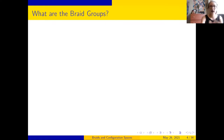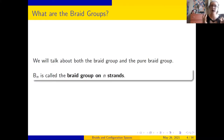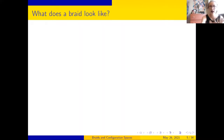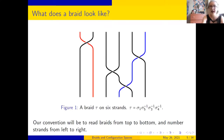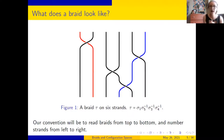These are very deeply related objects, but it's not obvious at first glance why that's so, and I'll try to give a good justification for that. So, what are the braid groups? We're going to be talking about both the braid group and the pure braid group. I'm going to write the braid group as B sub n. There are many different ways you can denote the braid group depending on whose books you read. I'm going to talk about the braid group on n strands.